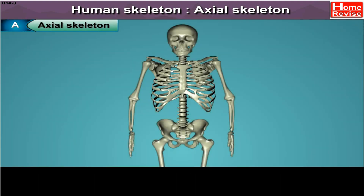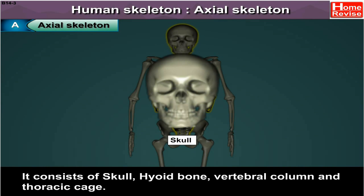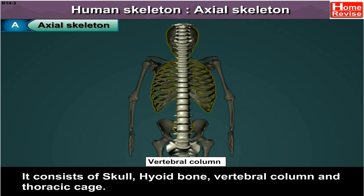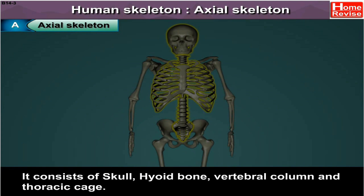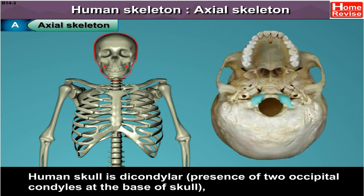Axial skeleton consists of 80 bones. It consists of the skull, hyoid bone, vertebral column, and thoracic cage. The skull is formed by 28 bones. Human skull is dicondylar, that is, there is presence of two occipital condyles at the base of the skull.